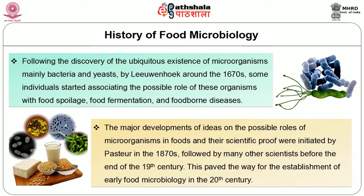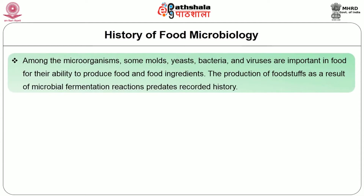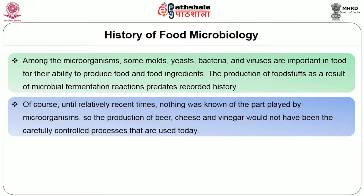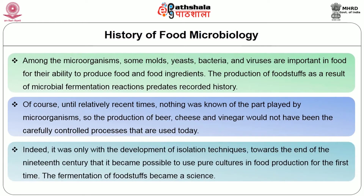This paved the way for the establishment of early food microbiology in the 20th century. Among the microorganisms, some molds, yeast, bacteria and viruses are important in food for their ability to produce food and food ingredients. The production of foodstuffs as a result of microbial fermentation reactions predates recorded history. Until relatively recent times, nothing was known of the part played by microorganisms, so the production of beer, cheese and vinegar would not have been the carefully controlled processes used today. It was only with the development of isolation techniques towards the end of the 19th century that it became possible to use pure cultures in food production for the first time, and the fermentation of foodstuffs became a science.